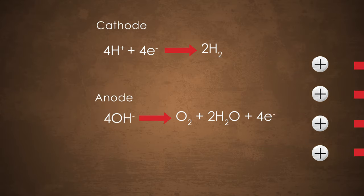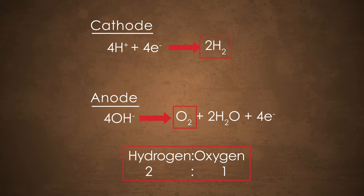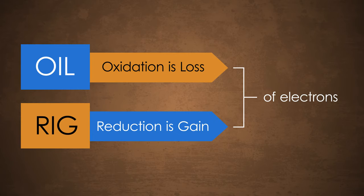Combining both reactions that are taking place simultaneously, we get a redox reaction. Notice that the balanced equation gives the gases a 2 to 1 ratio. Remember OIL RIG as a way of tracking electrons in a redox reaction.